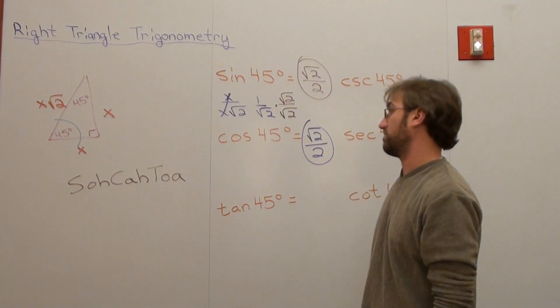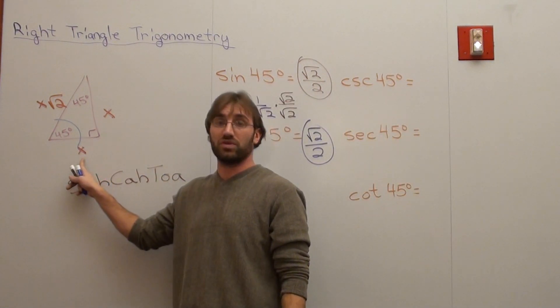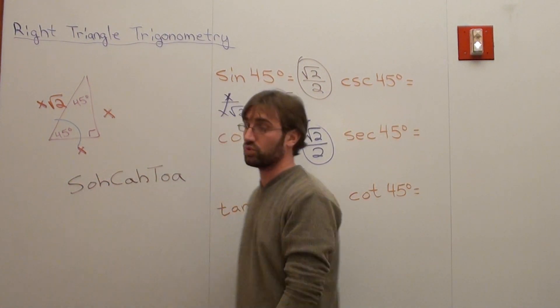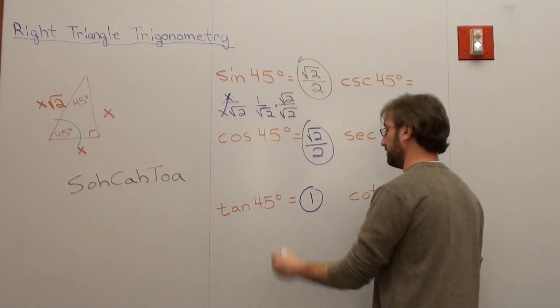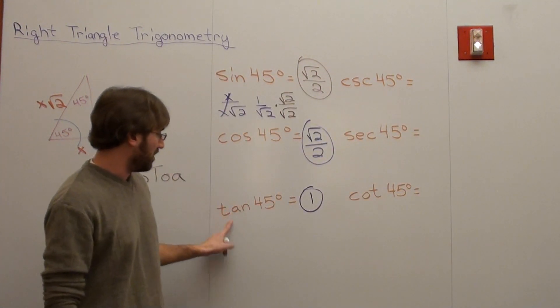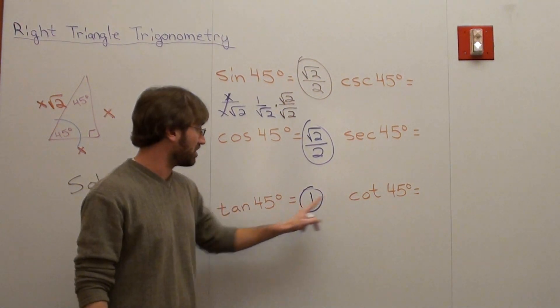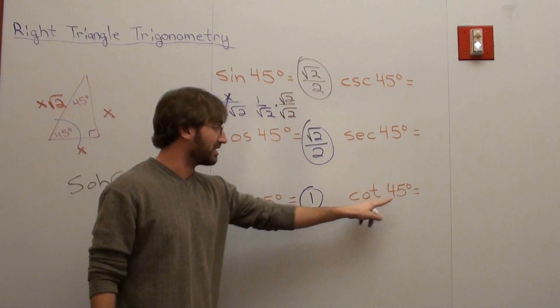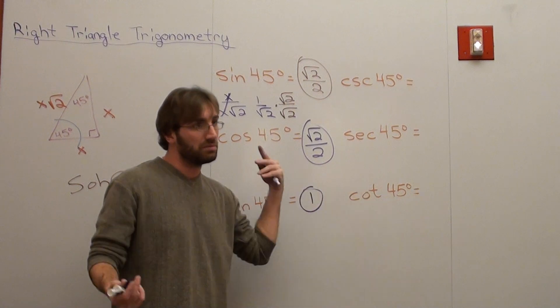Let's do the tangent of 45 degrees. That's the opposite over the adjacent, which is x over x, which is 1. Finito. Done. Let's do the cotangent of 45 degrees. This is its co-function, tangent and cotangent. This is its complementary angle. It's 1.